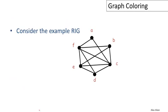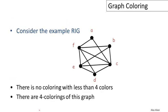Let's take a look at an example RIG. For this particular graph, there is no coloring that uses fewer than four colors, but there is at least one 4-coloring of this graph and here it is. I've used colored labels and register names so that you can see what registers we might assign to each of the nodes.